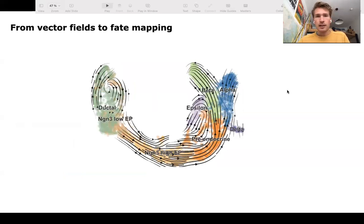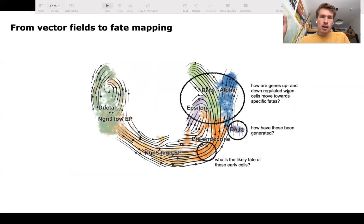So say we have some data like this pancreas data here, we computed RNA velocity, we projected it into low dimensions. Now we are arguing that for detailed questions of trajectory inference, such as gene expression trends towards these terminal alpha, beta and epsilon populations, and questions like how these delta cells have likely been generated, it's actually not enough to just look at the two-dimensional arrows,